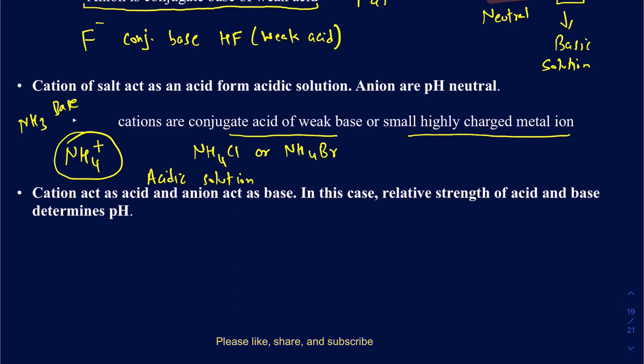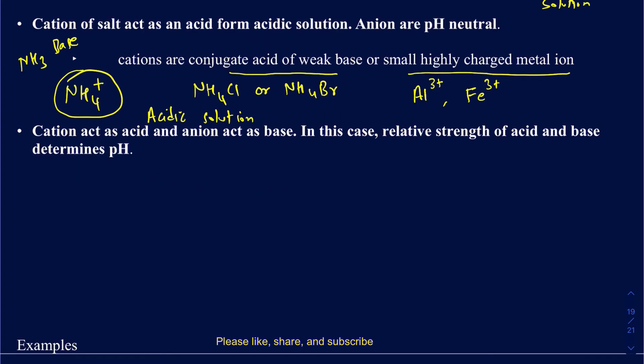In addition to conjugate acids of weak bases, you also want to worry about small, highly charged metal cations. The most common ones you'll see are Al3+ and Fe3+. Those are going to be highly charged metal ions, and their solutions are going to be acidic. Keep in mind that those metal cations also act as Lewis acids, which gives it away that they are going to be making an acidic solution when dissolved in water.